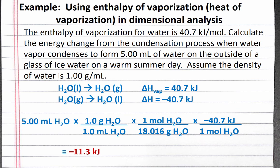Completing the calculation, we should get negative 11.3 kJ. The negative means energy is transferred from the water vapor, our system, to the glass of ice water, the surroundings, since condensation is an exothermic process.